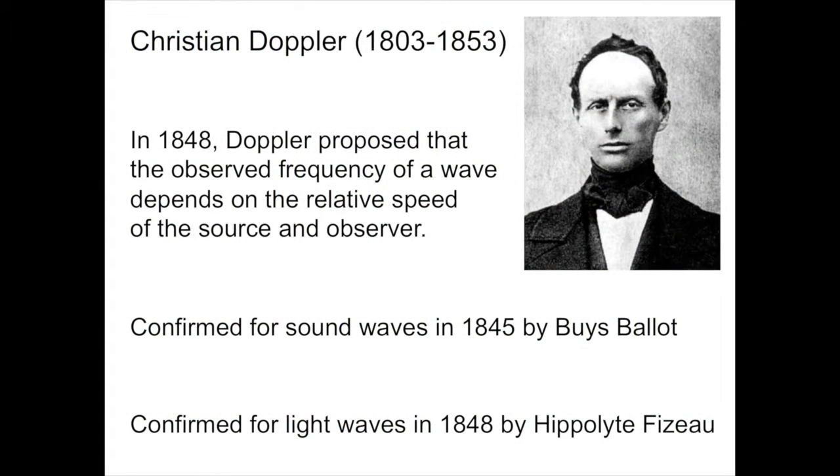Christian Doppler was an Austrian physicist working in Prague, who in 1848 proposed that the observed frequency of a wave depends on the relative speed of the source and the observer. This could apply to light waves, sound waves, or any kind of oscillatory phenomenon. It was confirmed experimentally for sound waves in 1845 by the Dutch chemist Buys Ballot, and for light waves in 1848 by the French physicist Hippolyte Fizeau.